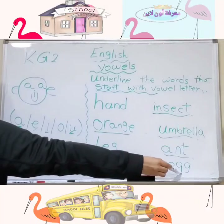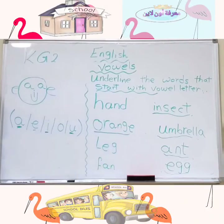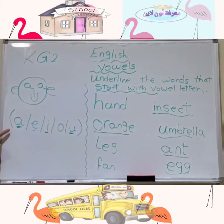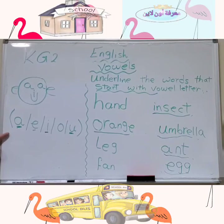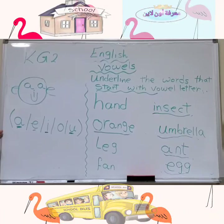By the way, all other letters are called consonants. Yes, we have five vowels and all other letters are called consonants. So, how many vowels do we have? We have five vowels. What are these vowels? A, E, I, O, and U.